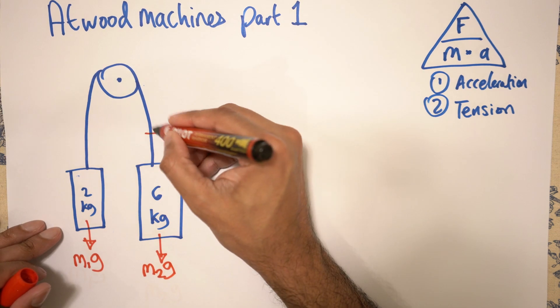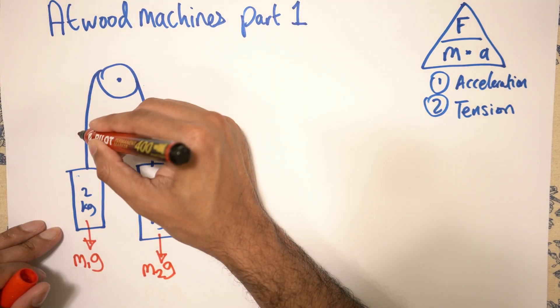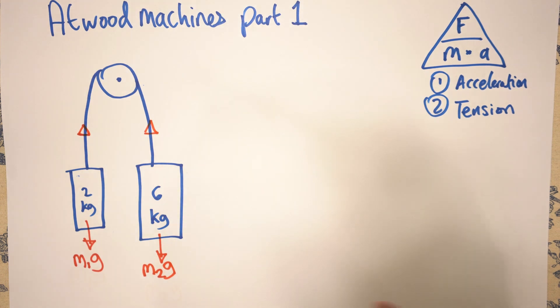There's of course also a tension in the string going the other way, so we'll work out how to do the acceleration first, and then the tension. You have to do it that way around.